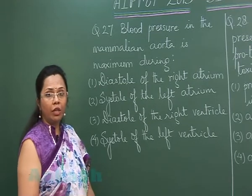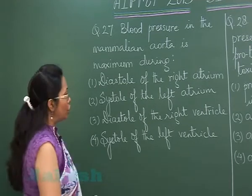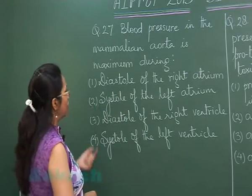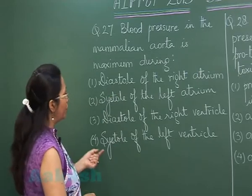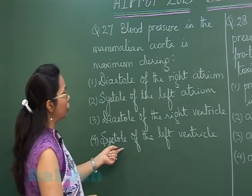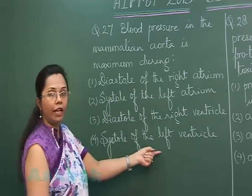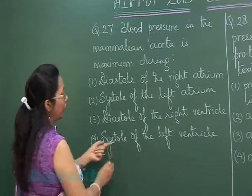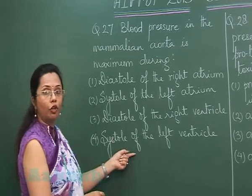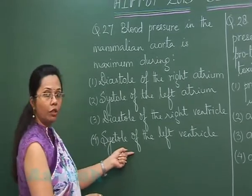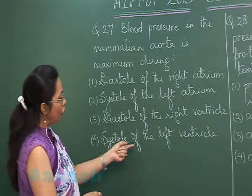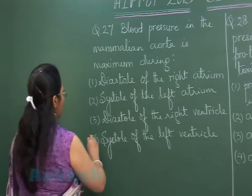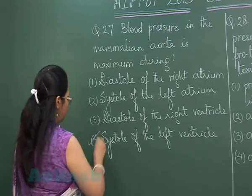Looking at the four options, option 4 is 'systole of the left ventricle.' This is the time when the aorta will also have the highest pressure, because of the pumping from the left ventricle. So the answer is option 4.